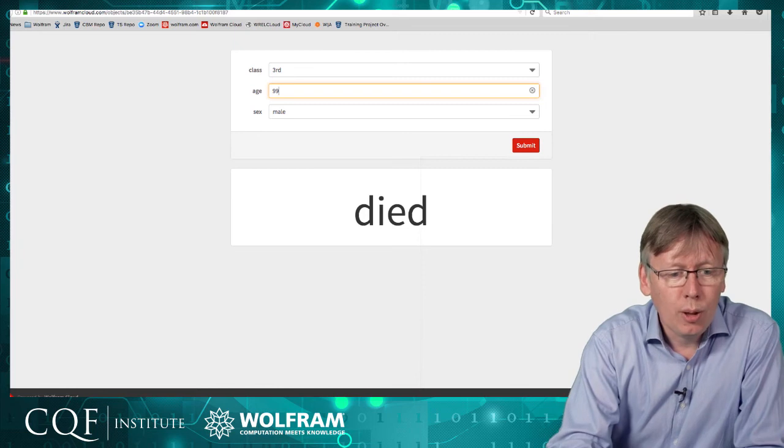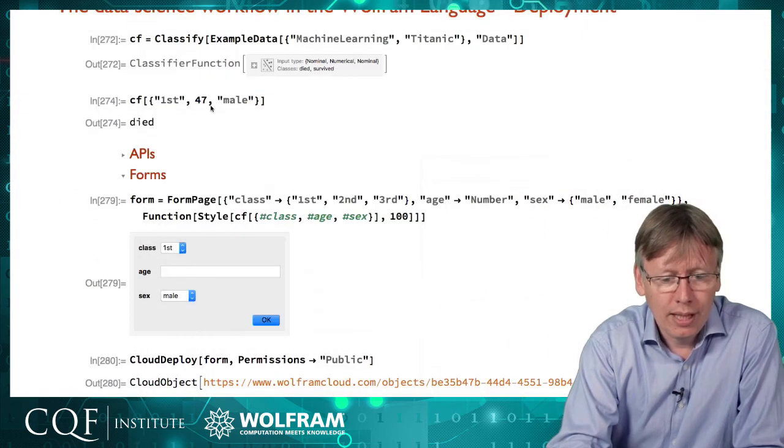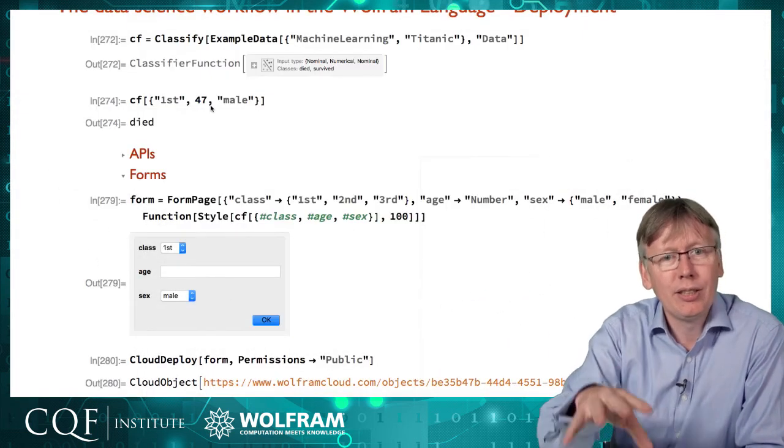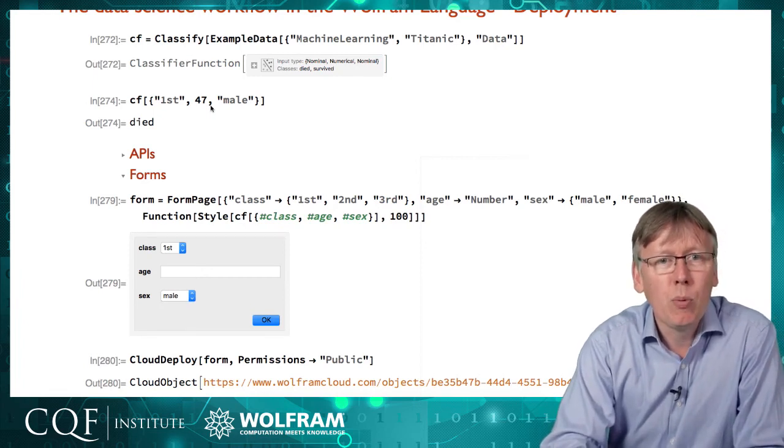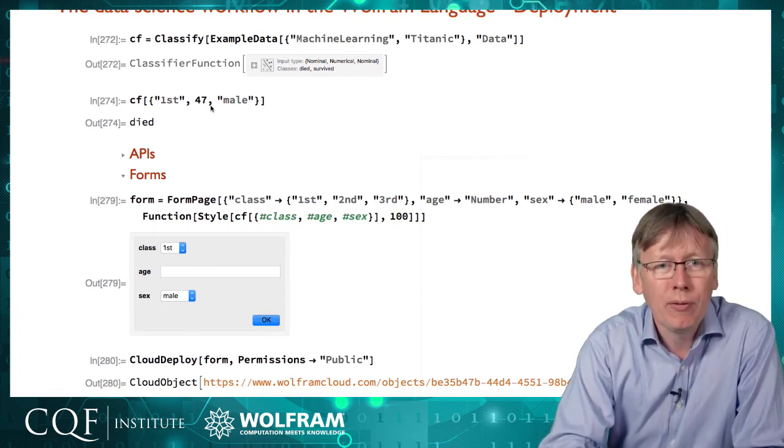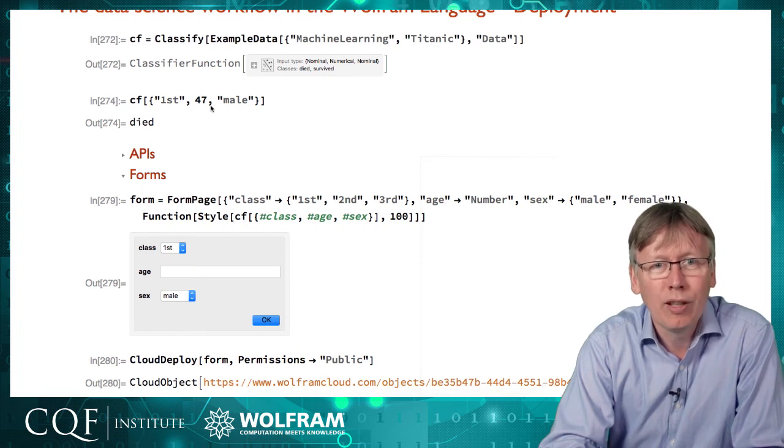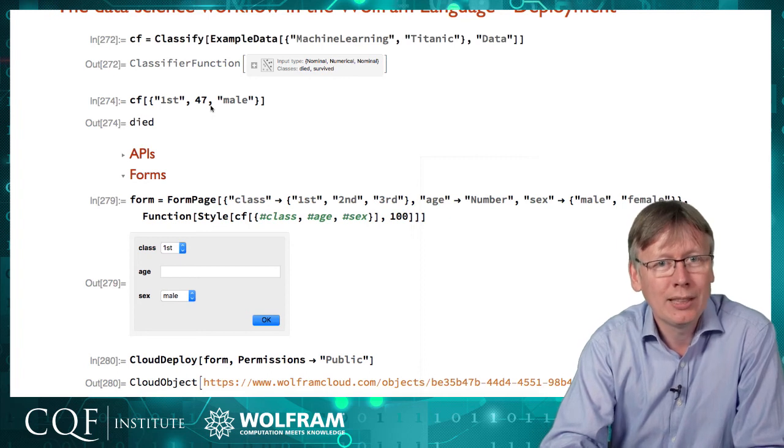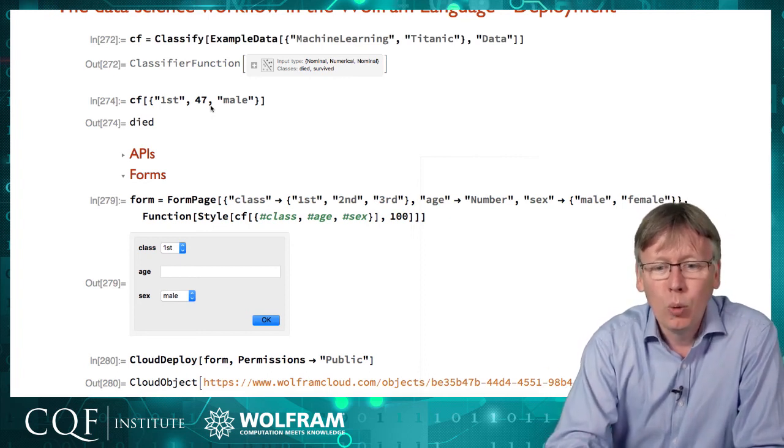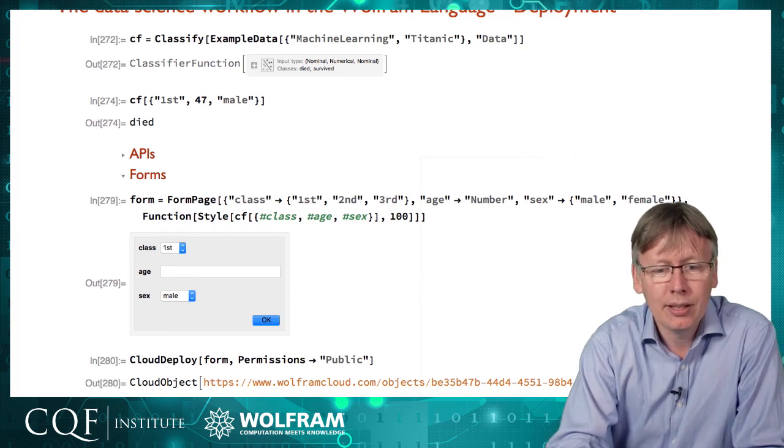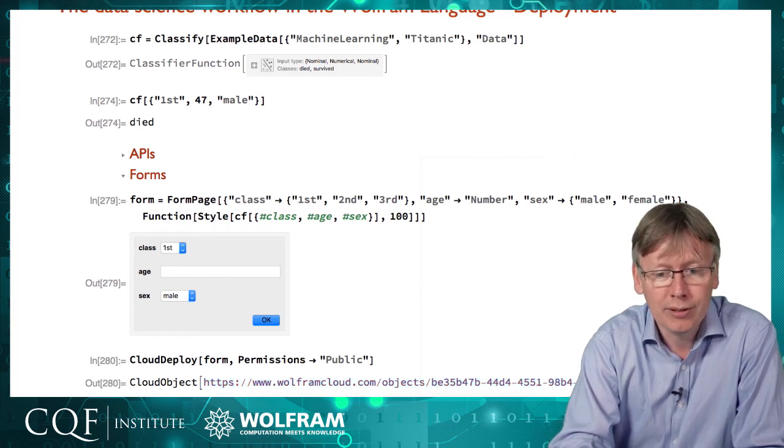So the whole process of going from the data to the classification to deploying it is not something that you can do without some coding, but it's three, four lines of code for straightforward cases. And we've done a classification, built a machine learning classifier, pushed it to a website and set up either web services or web pages that allow us to access it and deploy that to anyone we want.